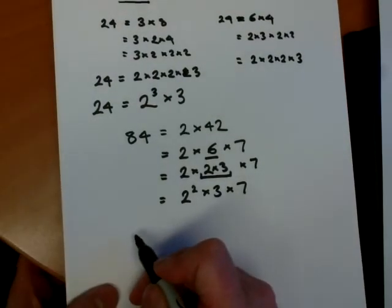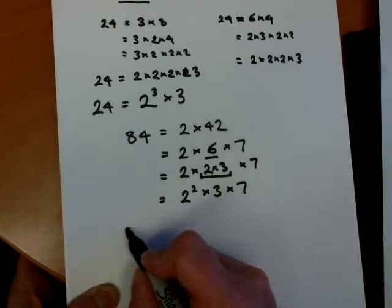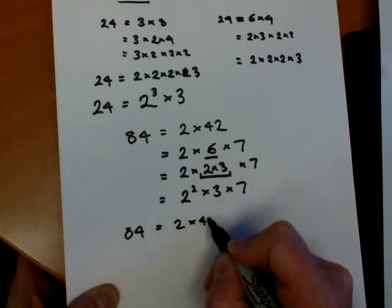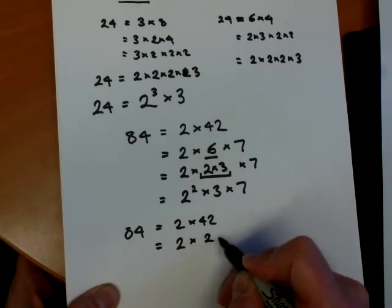So let's try something. Let's suppose we didn't know it was 6 times 7. What would have happened if we kept halving? And 84 was 2 times 42, which equals 2 times, let's say we did 2 times 21.